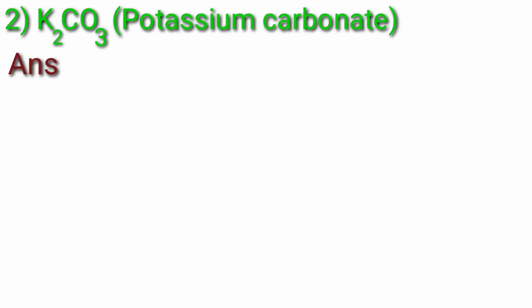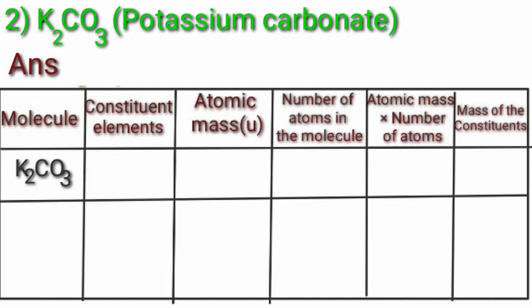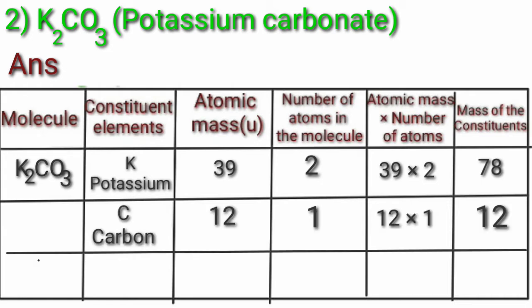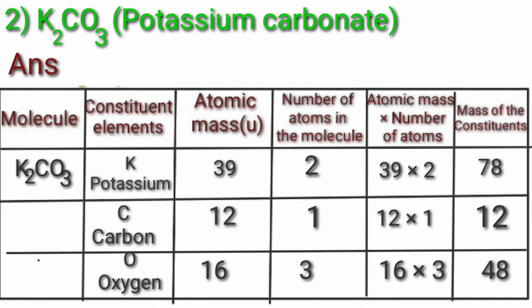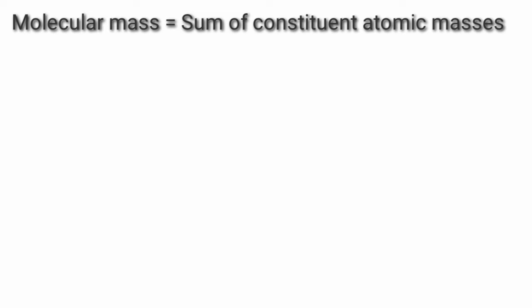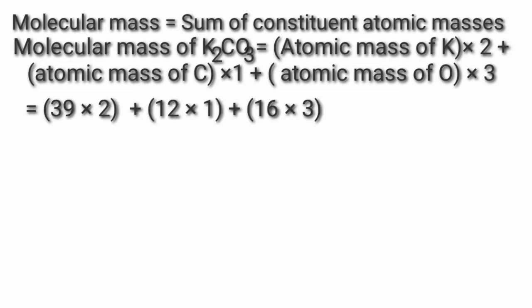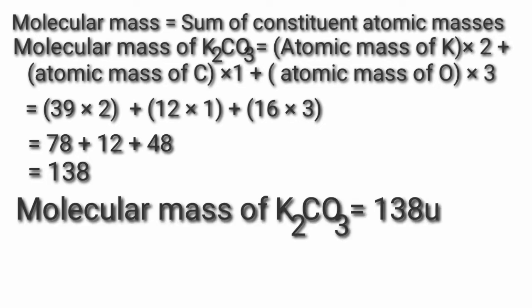Second, K₂CO₃ — potassium carbonate. Constituent elements: potassium atomic mass 39, carbon atomic mass 12, oxygen atomic mass 16. Molecular mass of K₂CO₃ = (39×2) + (12×1) + (16×3) = 78 + 12 + 48 = 138. So molecular mass of K₂CO₃ is equal to 138 U or 138 Dalton.